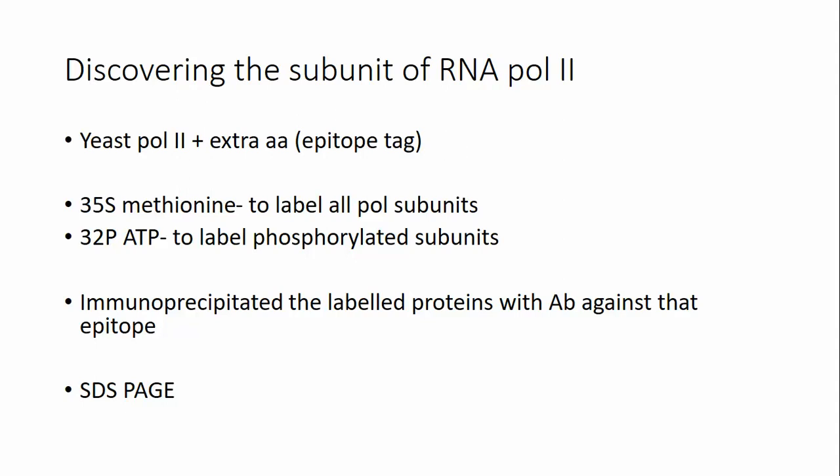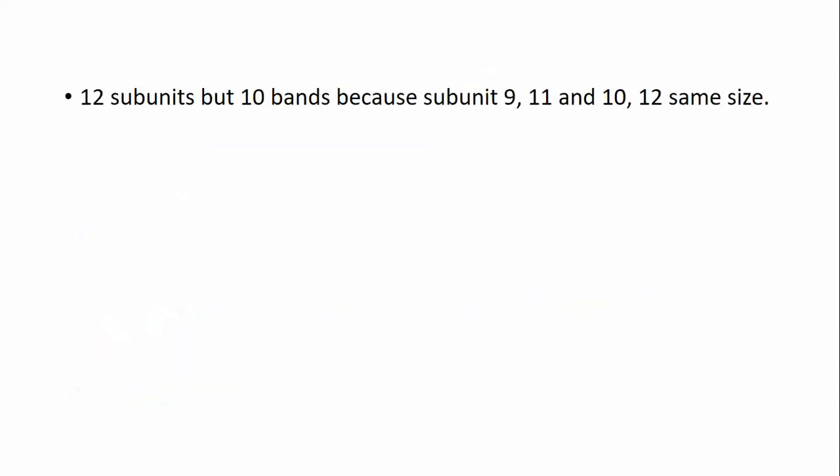Immunoprecipitation was used to isolate those proteins using an antibody against the attached epitope. Running them on SDS-PAGE revealed 10 bands initially. Later it was found there are actually 12 subunits, because subunits 9 and 11 were of almost coinciding sizes, as were subunits 10 and 12.